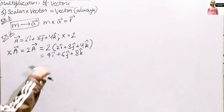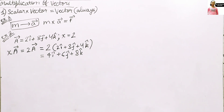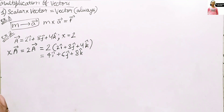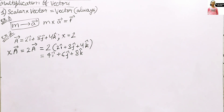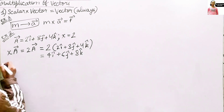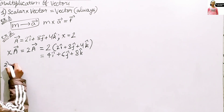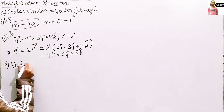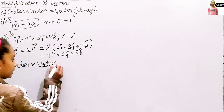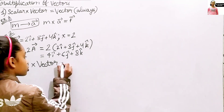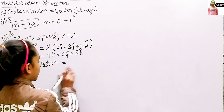Now let's proceed to the second condition. The second condition is vector into vector. When we multiply a vector by a vector, what will we get? It can be both — scalar or vector.